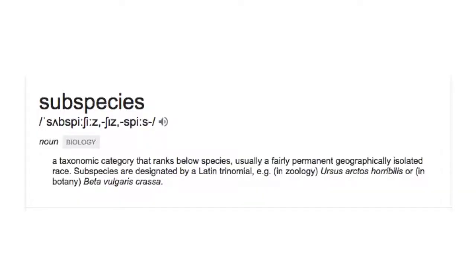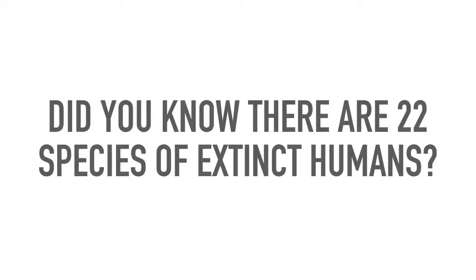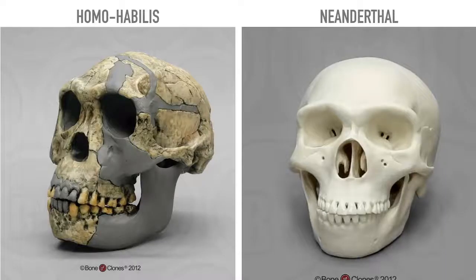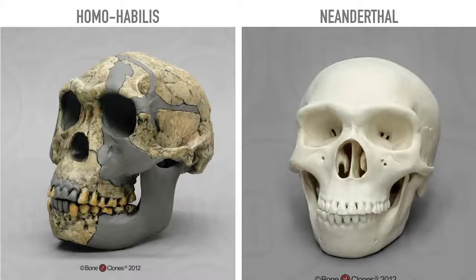A subspecies is a taxonomic category that ranks below species, usually a fairly permanent geographically isolated race. Did you know that there are 22 species of extinct humans? Here are two examples: the Homo Havillus and the Neanderthal. The Neanderthal has slightly wider eye sockets, slightly different shape at the top of the head, more prominent cheekbones, and a slightly different jaw — so these differences mark it as a completely different species.